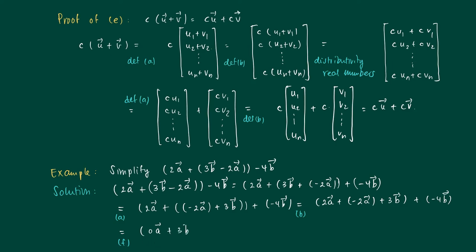So the 0 vector, we can leave it out because that's another property. So we get 3b plus minus 4b.